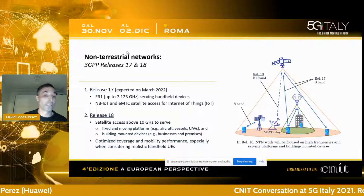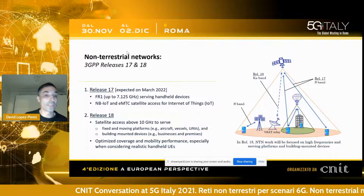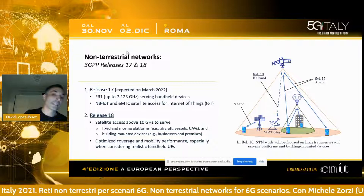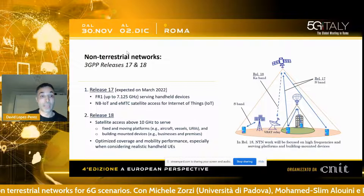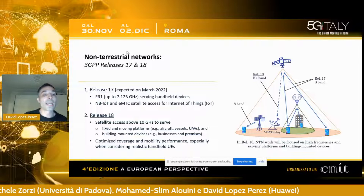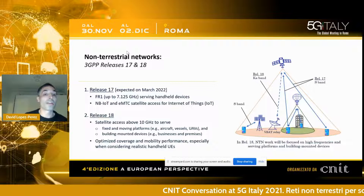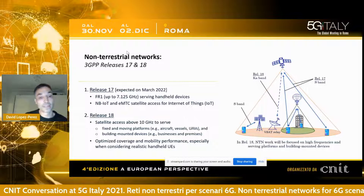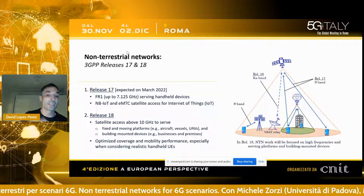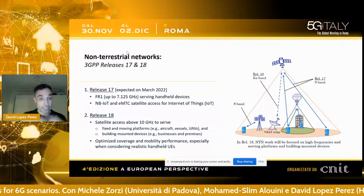Currently within Release 17, work is being done on satellite access for handheld devices operating in sub-7 GHz frequencies, with particular attention to narrowband IoT and enhanced machine type communications for Internet of Things services. Release 18, which is about to start, is expected to look into higher frequencies above 10 GHz, with focus on providing satellite access to fixed and moving platforms like aircraft, vessels, and UAVs, as well as to receivers mounted in buildings with higher directivity.